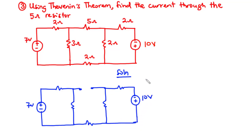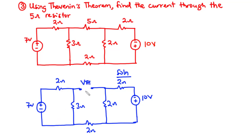So we have the 10 volt voltage source, we have 2 ohms, 2 ohms, 2 ohms, 3 ohms, and then 2 ohms. So this is Vth and then we label the terminals AB. Now let's distribute current throughout the circuit.